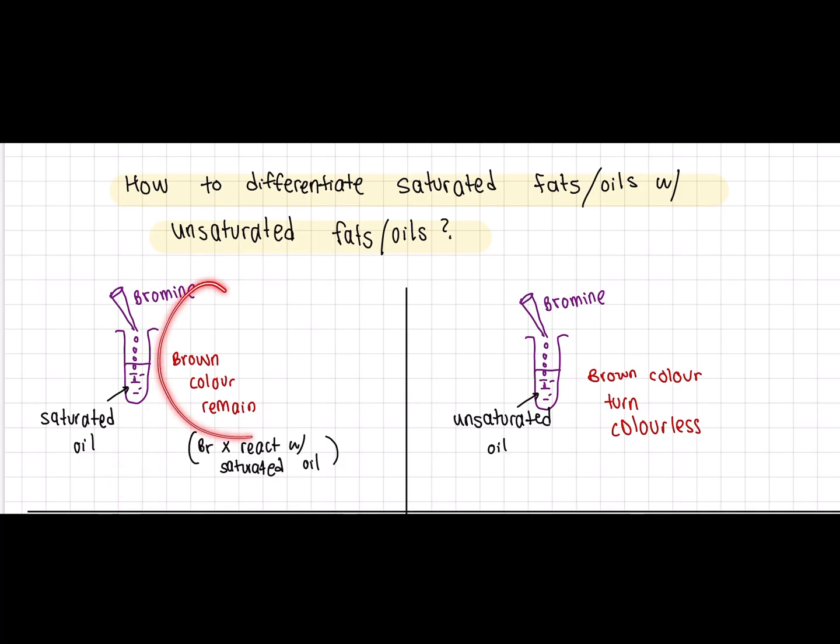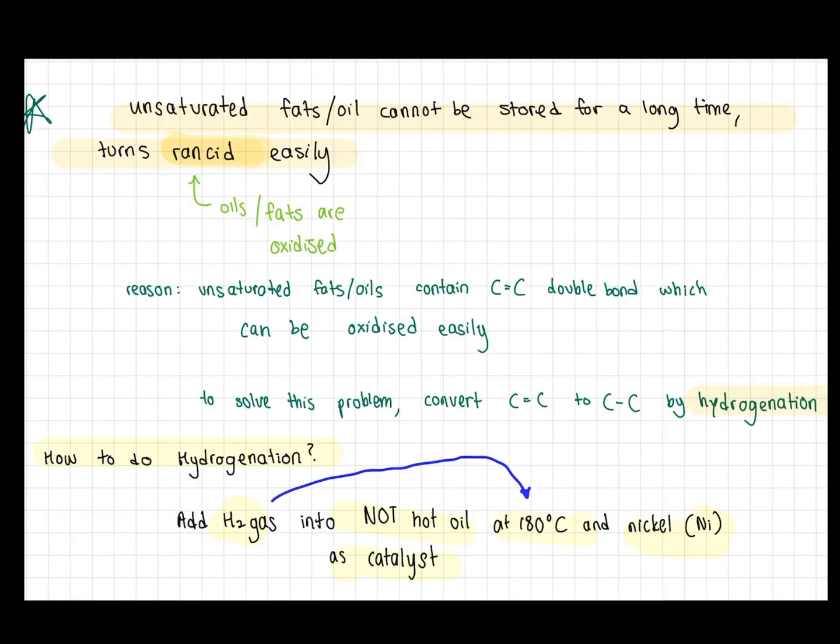Whereas if you put bromine into an unsaturated oil, the bromine is able to react nicely with the oil, so the brown color will eventually turn colorless. However, unsaturated fats or oils cannot be stored for a long time because it turns rancid easily. Oils or fats are easily oxidized.